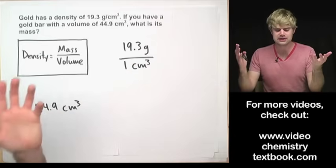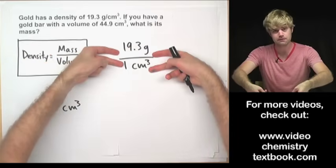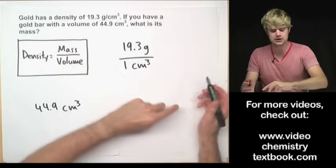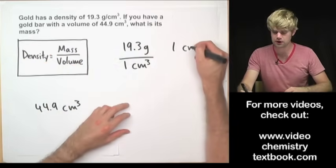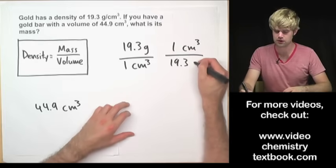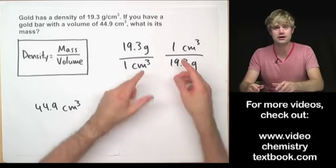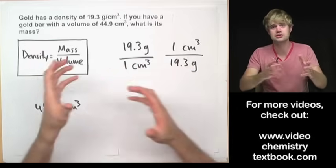As you know, anything that you can write as a conversion factor you can also flip. So I could write density like this, or I could flip it and put one cubic centimeter on the top and put 19.3 grams on the bottom. Either way this conversion factor lets me go between mass and volume.